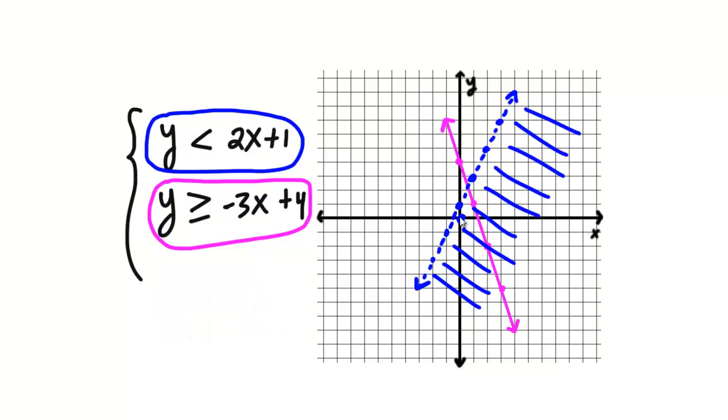All right, let's pick the other test point for the pink line. So we'll plug in 0, 0 again. 0 is greater or equal to negative 3 times 0 plus 4. So that reduces to 0 is greater or equal to 4. And we know that's false. So we'll shade the side that does not have the test point. So we'll shade this side here.